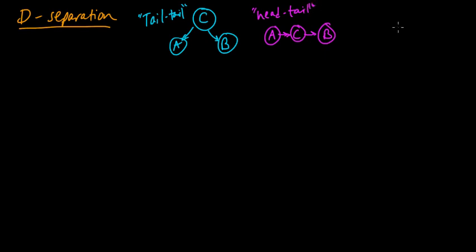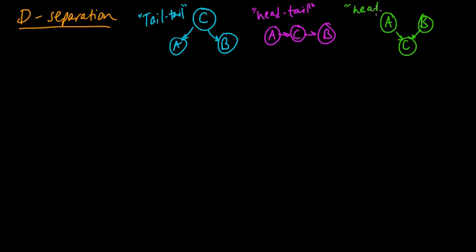And we had a third one which was A and B both going to C. This was a head-to-head relationship — head-to-head at C, head-to-tail at C, and tail-to-tail at C.